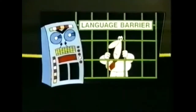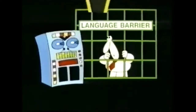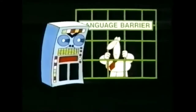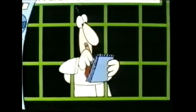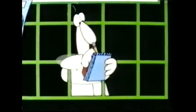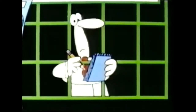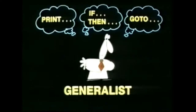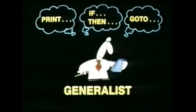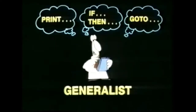In the early days of computing, there was a language barrier between computers and humans because you had to use machine language if you wanted to talk to the computer, either in binary code or its exact English equivalent. This was very slow and laborious. Every time a generalist wanted to tell the computer to print something or make a decision or repeat an operation, he had to break every statement down into tiny electronic steps.